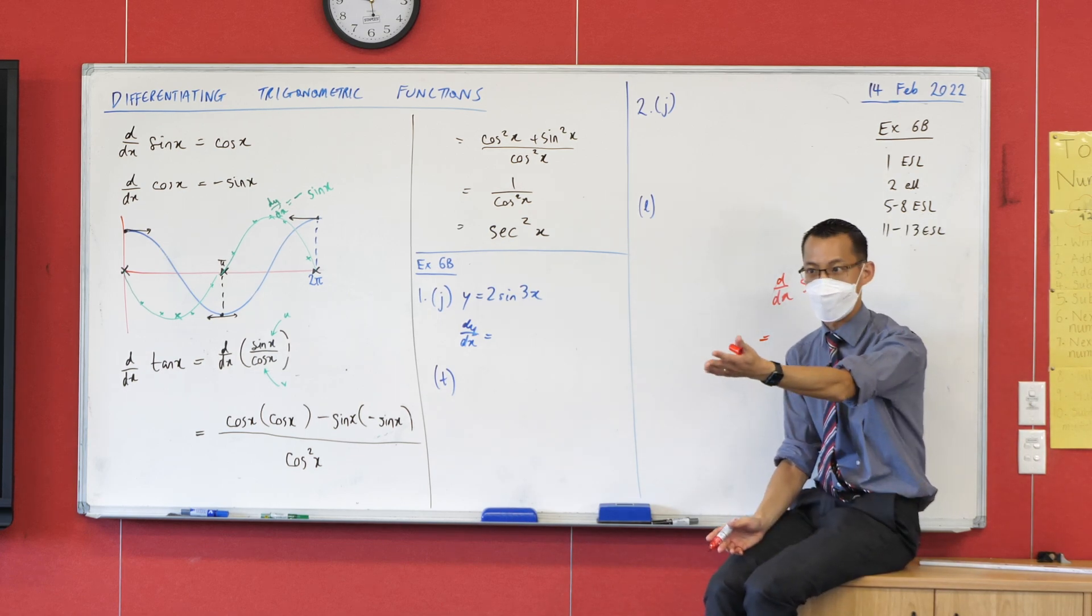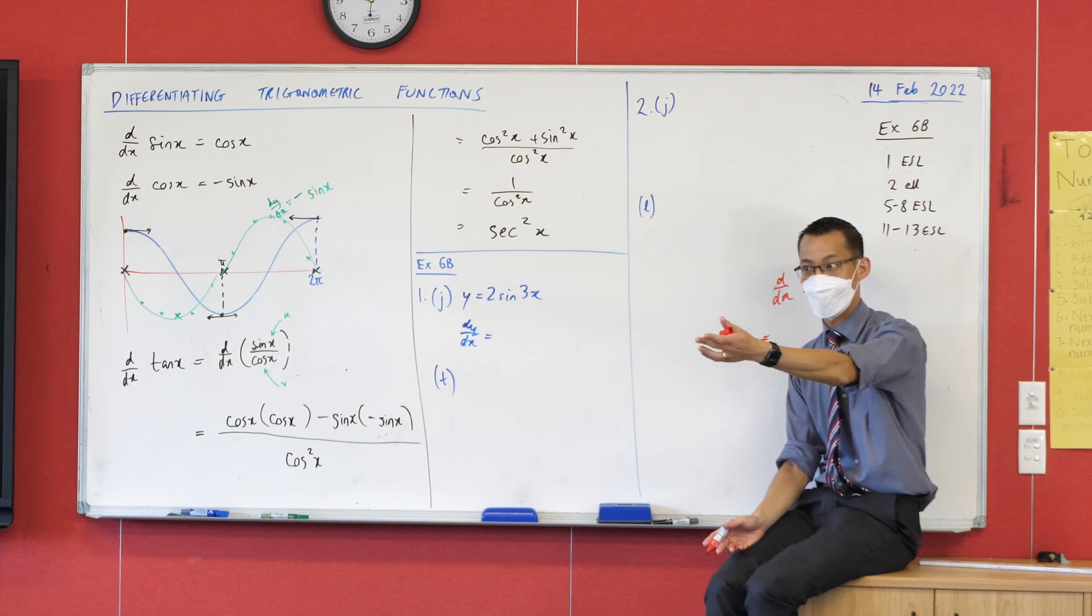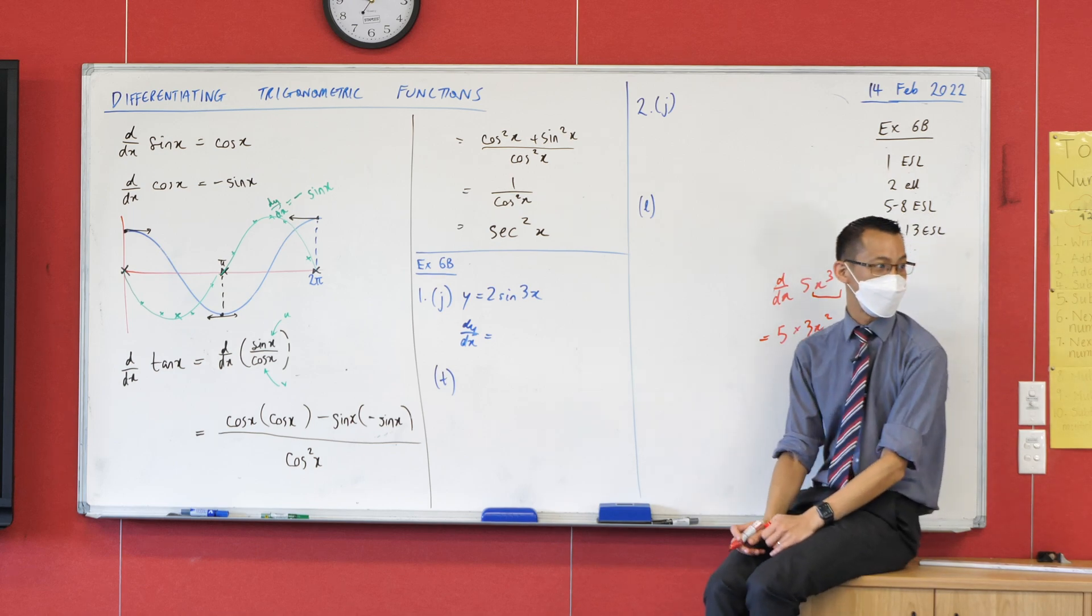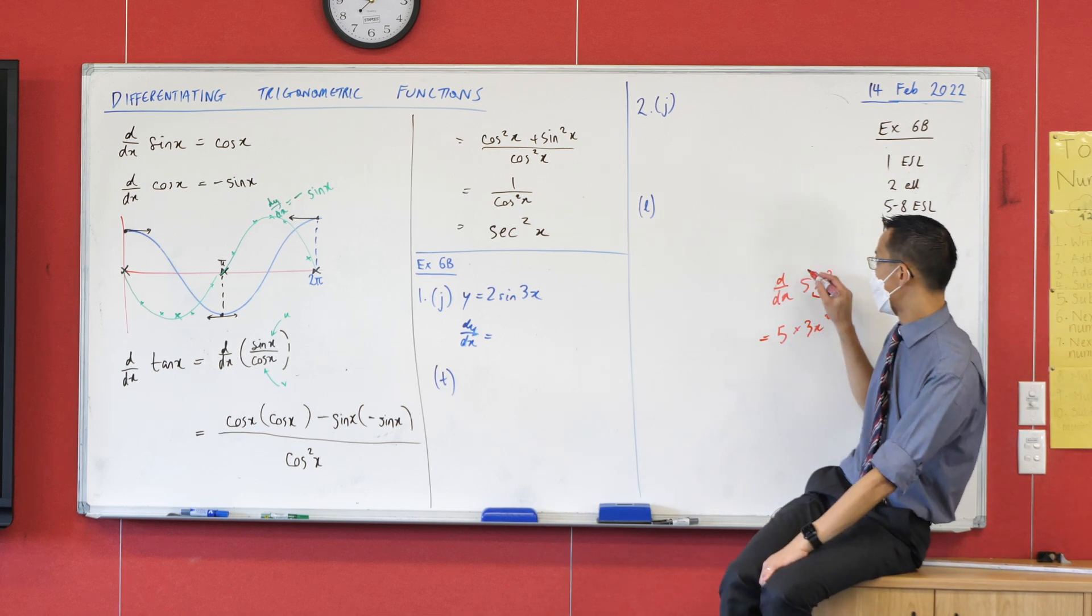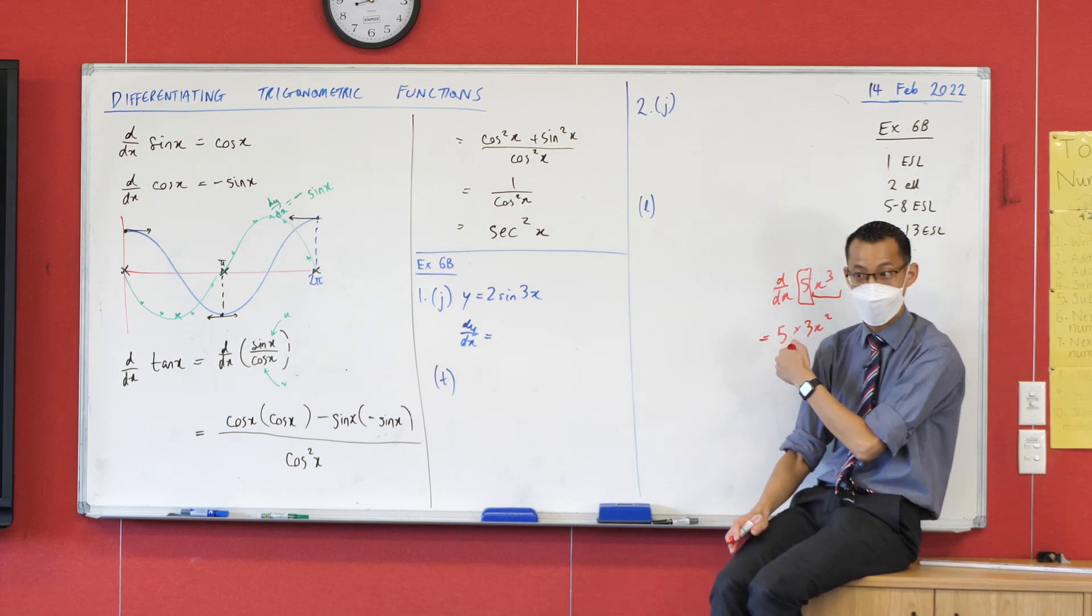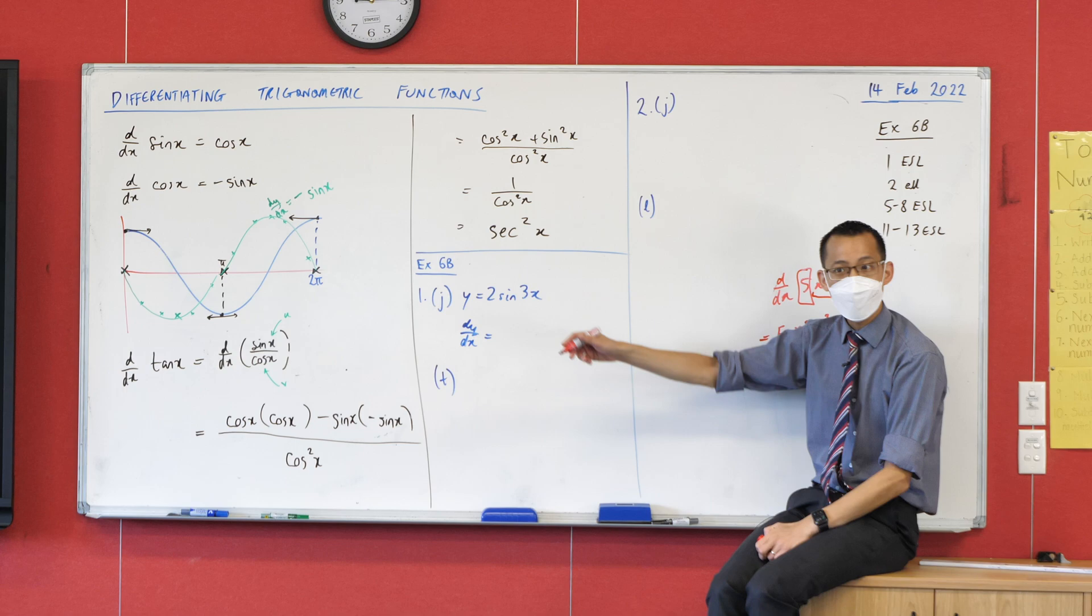The x cubed of course is 3x squared, so you're like oh that 3x squared, I'm going to now combine it back with that 5. So the way we would say this is, when you've got a constant coefficient right at the front, it doesn't really affect your differentiation. 15x squared, off you go. Same deal here.